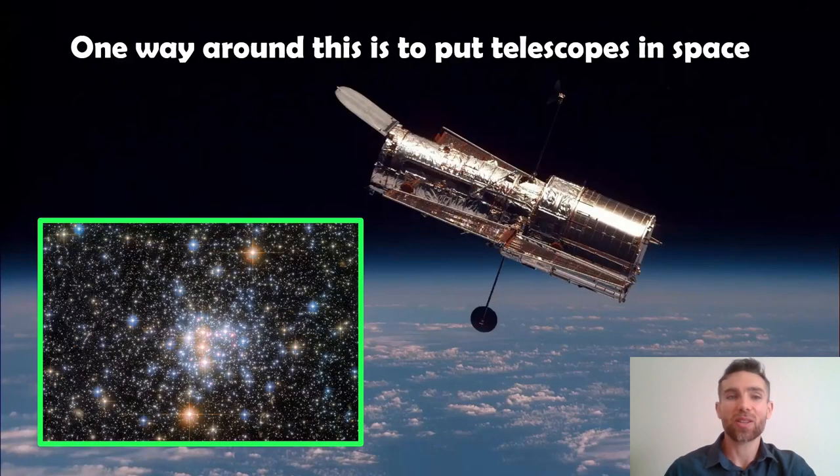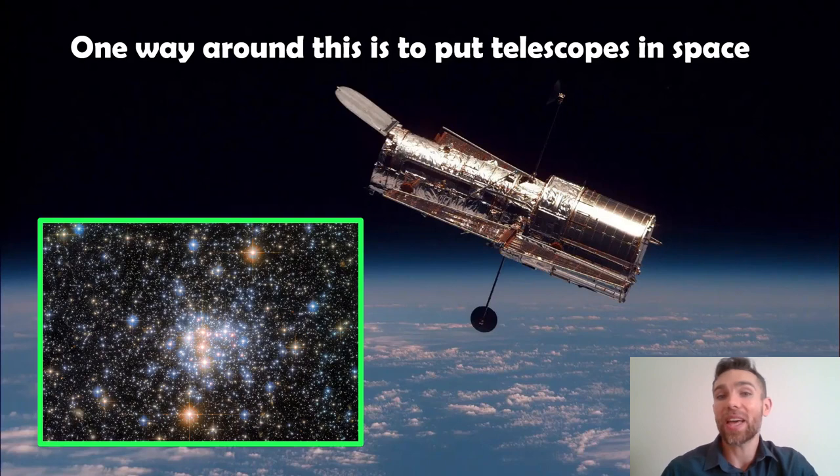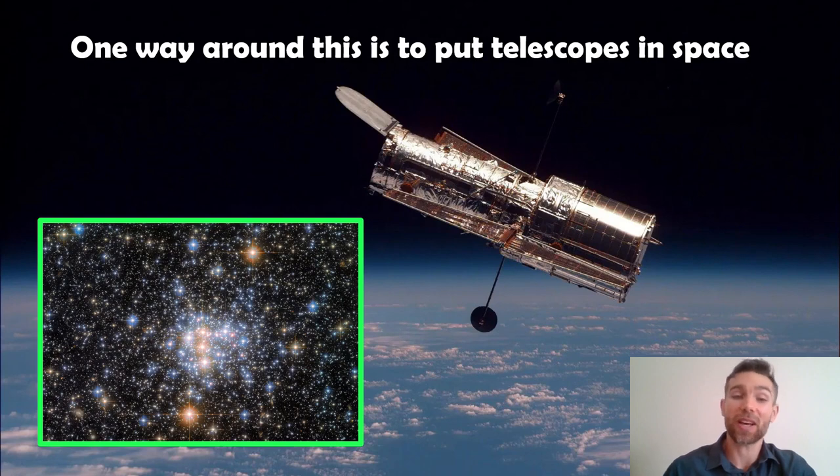Now there are a few ways around that. We can't all put a telescope into space though. So one way around it is to put a telescope into space. We're then not fighting with the atmosphere. And you can see some of these images we can get from space-based telescopes are fantastic because you're just not looking through the atmosphere there anymore. But we can't put telescopes in space all the time. There's only a limited amount there, and it's easier, cheaper to build them on the ground.